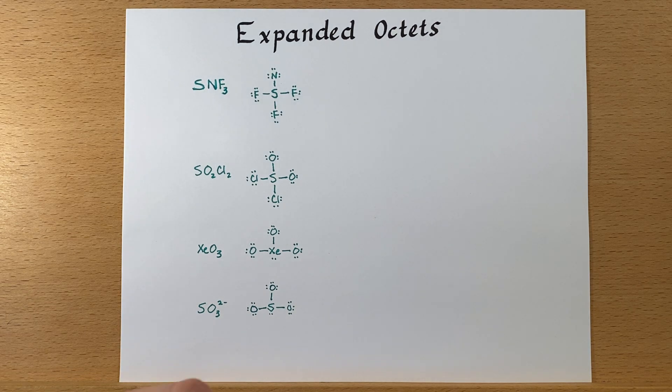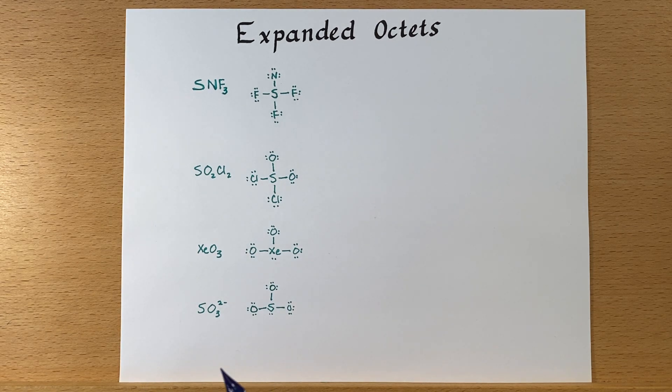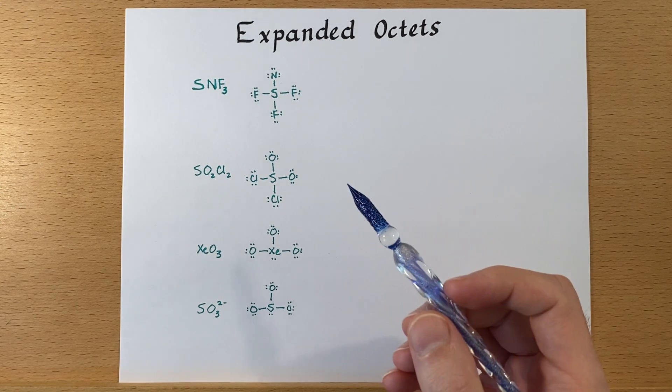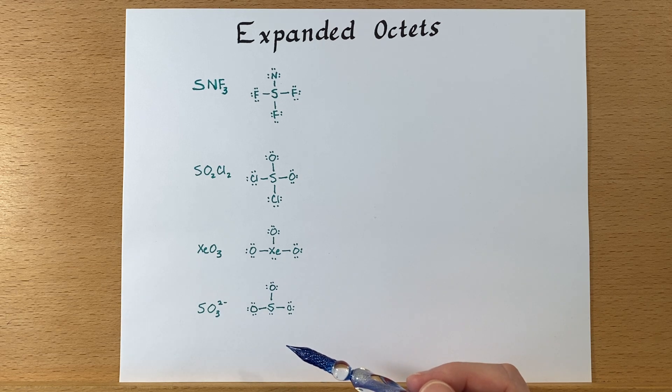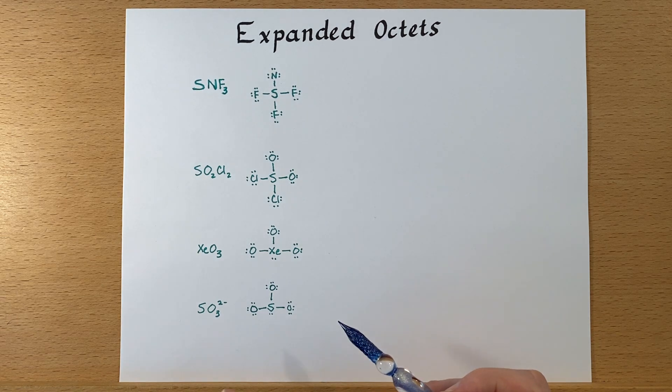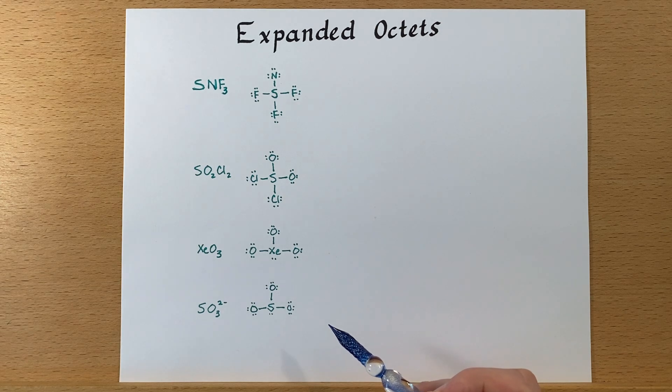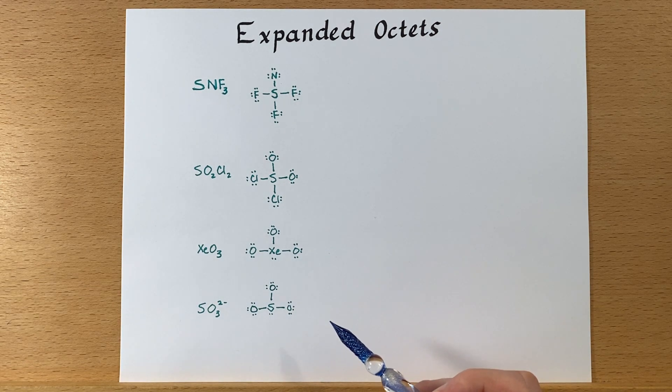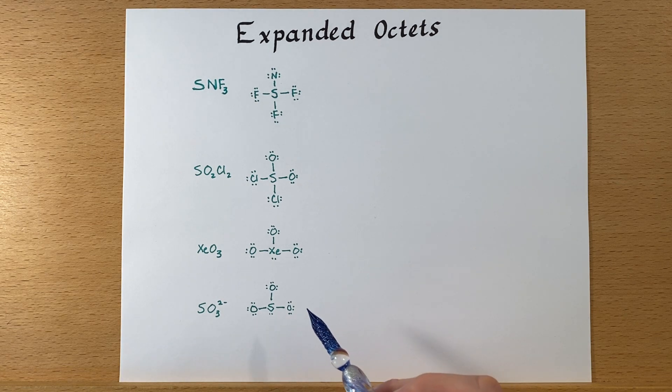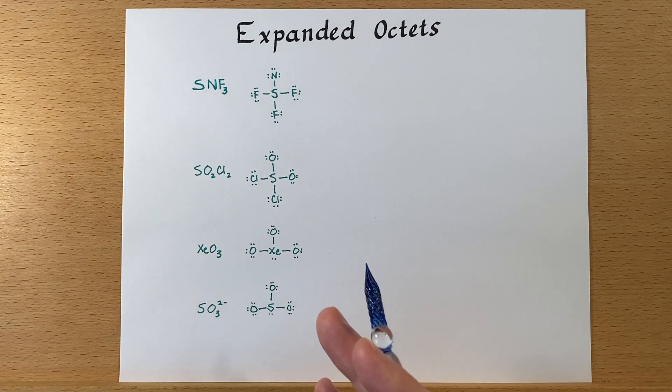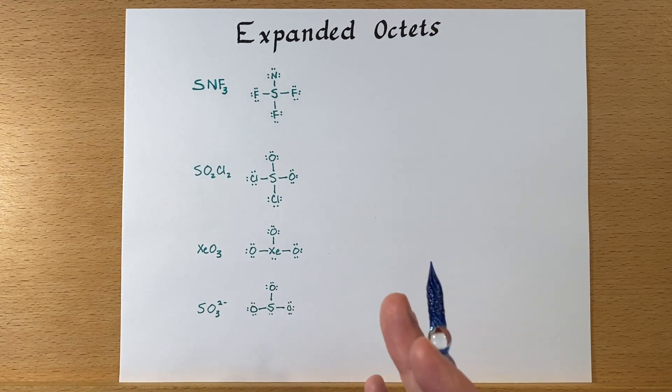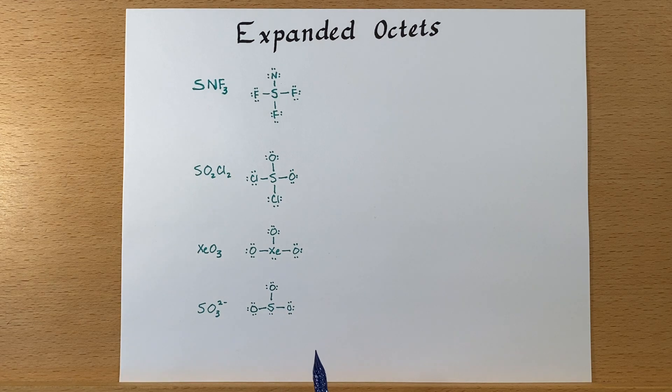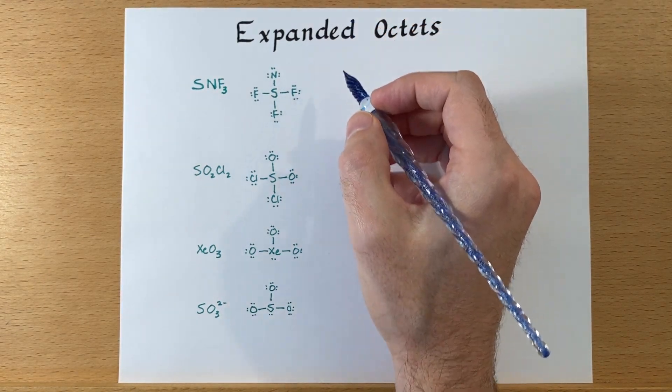Let's evaluate whether we should expand that octet. I have some examples here, and I've already drawn out the Lewis structure indicated by using the octet rule. This is a good place to start. Provide everything with an octet, assuming you have the electrons to do it, and then move from there. Let's look at the formal charges and see if there's any way we can improve on these structures.